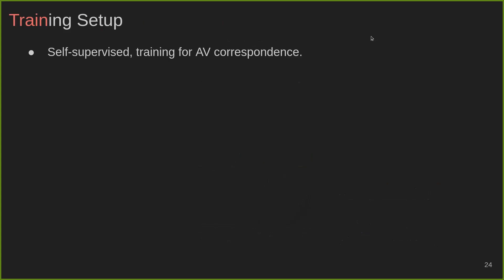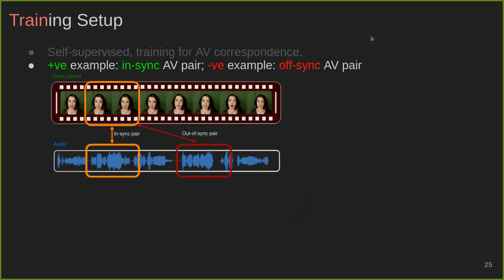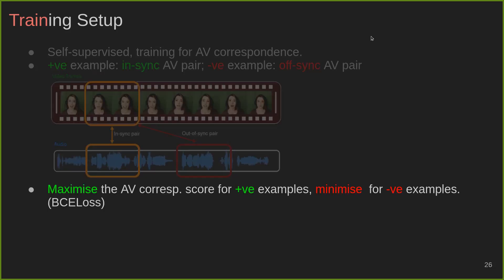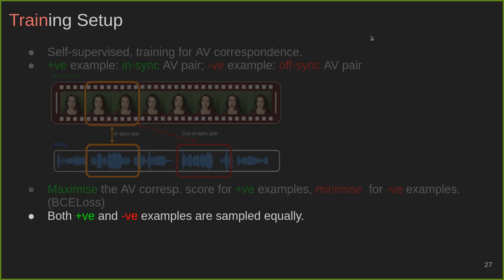We train our model for determining audiovisual correspondence in a self-supervised training pipeline. A positive example corresponds to an in-sync audiovisual input pair, while the negative example corresponds to an out-of-sync audiovisual input pair. The audiovisual correspondence score needs to be maximized for positive examples and minimized for negative examples. Both positive and negative examples are sampled equally.